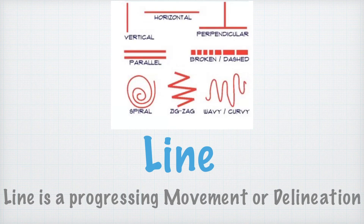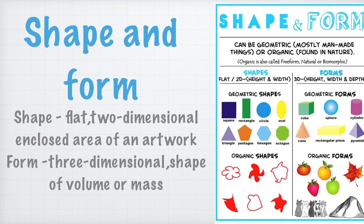Line is one of the seven elements of art. It is considered by most to be the most basic element of art. Line is progressive movement or delineation. We have already discussed line in our previous video.